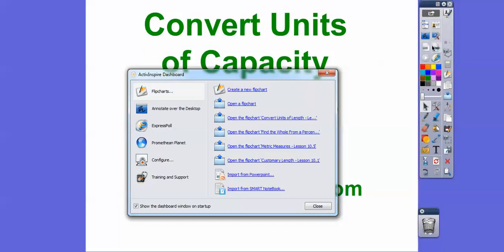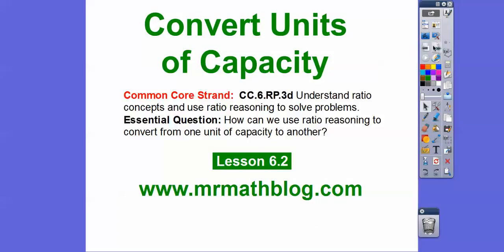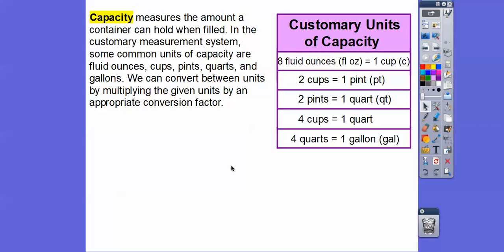Here's our Common Core strand for our most awesome teachers. Our question is: how can we use ratio reasoning to convert from one unit of capacity to another? Capacity measures the amount a container can hold when filled. In the customary measurement system, we have units of capacity in fluid ounces, cups, pints, quarts, and gallons. We can convert between units by multiplying by the appropriate conversion factor.